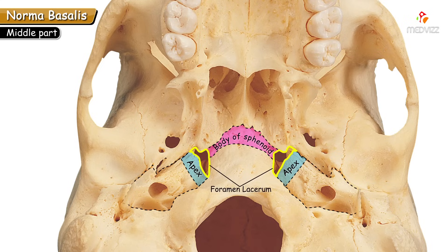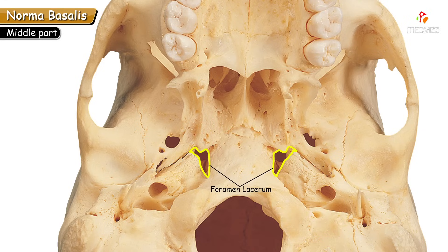Only two structures pass through the foramen lacerum: the meningeal branch of the ascending pharyngeal artery and an emissary vein. Importantly, the carotid canal and the pterygoid canal both open into the foramen lacerum from inside.